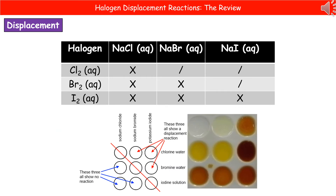In class, you should have done this reaction using a spotting tile. In it, you've got a solution of sodium chloride, one of sodium bromide, and another of potassium iodide — three spots in your spotting tile with each of those solutions. Then we add some chlorine water to one row, bromine water to another, and the iodine solution to the last row. What we're looking for is a change in colour that tells us we've seen a displacement reaction.